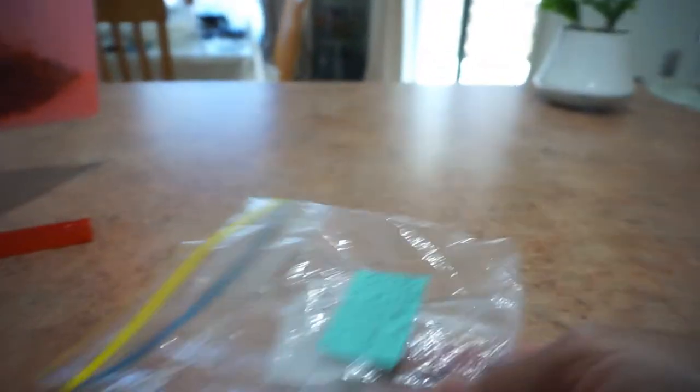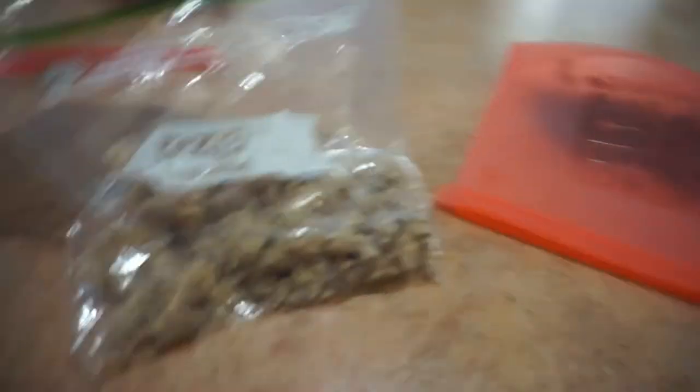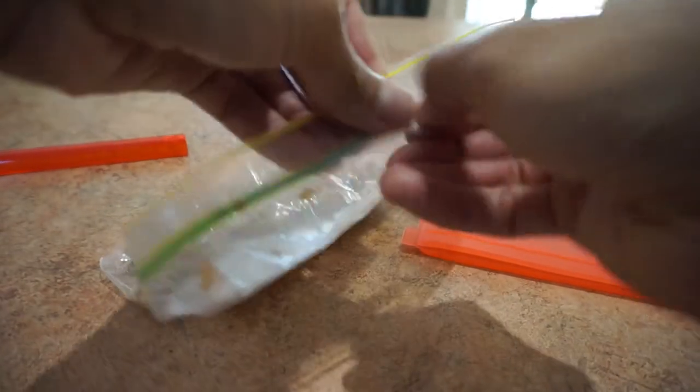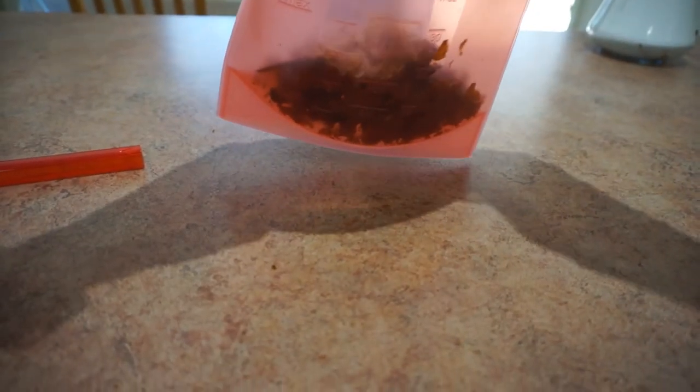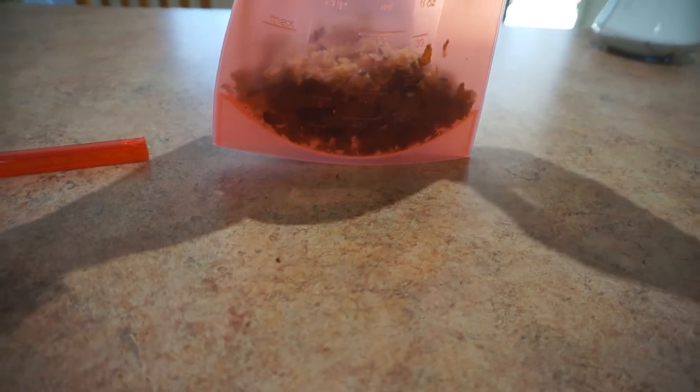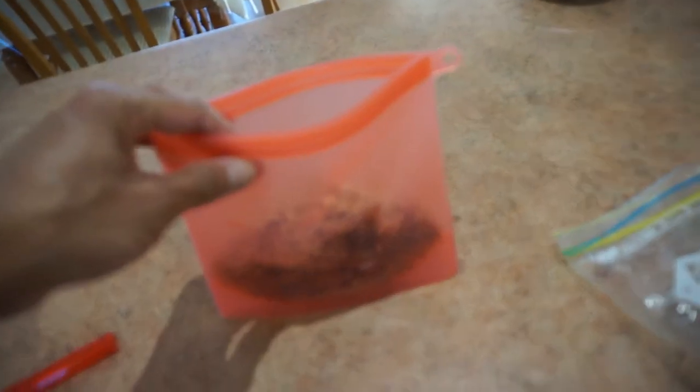So that Ziploc bag will be washed and reused. The rice goes in a separate bag - it's a bit spiky and can damage the bags if you don't double bag it. The rice goes in there. So at camping you just add your dehydrated meal to that.